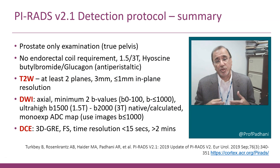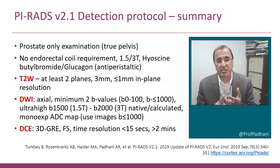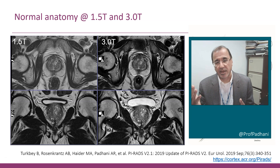When we do a prostate MRI examination, there are three components: the T2 sequence, the diffusion sequence, and dynamic contrast enhancement. Remember, we're only looking at the prostate gland. A normal prostate will look like this at 1.5 and at 3 Tesla.